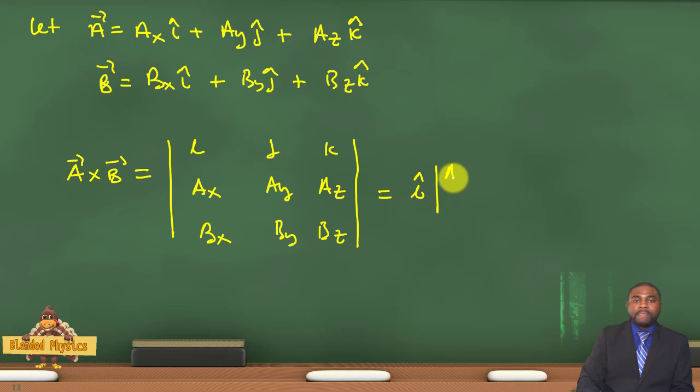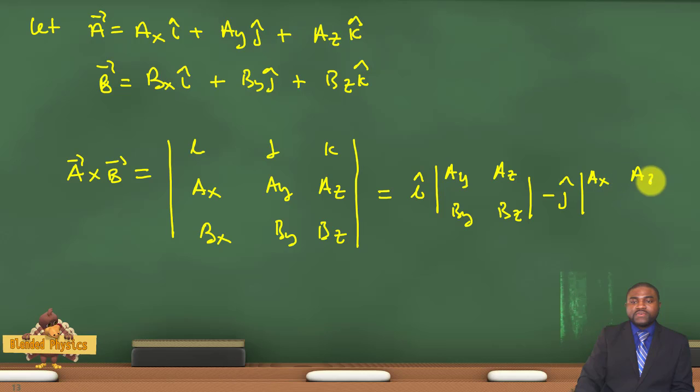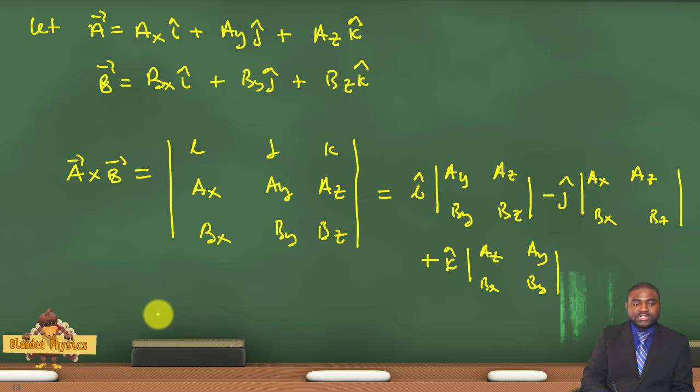Which essentially is equal to i times the determinant Ay Az By Bz, minus j times Ax Az Bx Bz, plus k times Ax Ay Bx By.